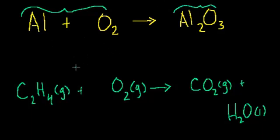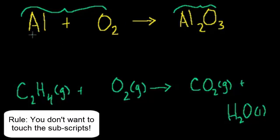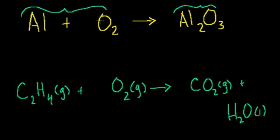Well, you have a problem here. The way I've written it right now, I have one atom of aluminum plus two atoms of oxygen — they're bonded to each other, but there are two atoms of oxygen here, one molecule of diatomic oxygen with two oxygen atoms. When you add them together, what do I have? Two atoms of aluminum and three atoms of oxygen.